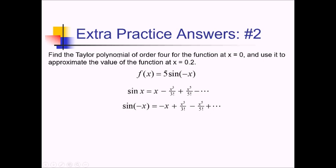Now I'll write the fourth-order Taylor polynomial for 5 sine of negative x, applying the 5 to this series and cutting off at fourth order. Multiplying everything by 5: negative x becomes negative 5x, and plus x cubed over 3 factorial becomes plus 5x cubed over 3 factorial, which since 3 factorial is 6 you could write as 5 over 6 x cubed. Since this is fourth order and there is no x to the fourth term, we just stop at x cubed.